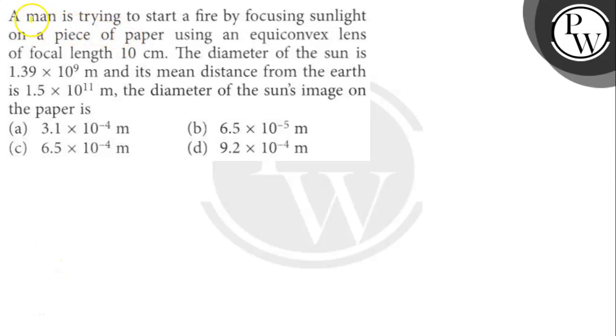The question says: A man is trying to start a fire by focusing sunlight on a piece of paper using an equiconvex lens of focal length 10 cm. The diameter of the sun is 1.39 × 10^9 meters and its mean distance from the earth is 1.5 × 10^11 meters. So the diameter of the sun's image on the paper is how much? Let's find out.